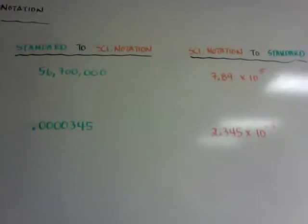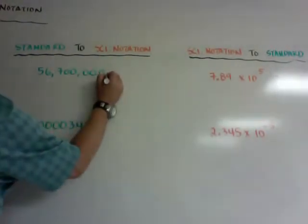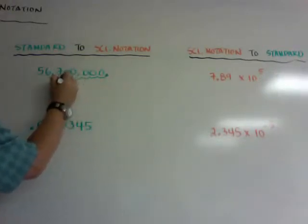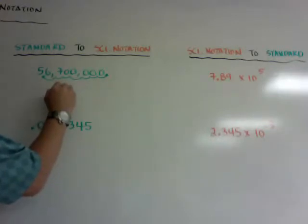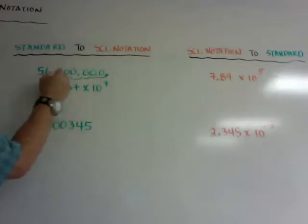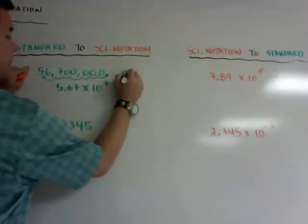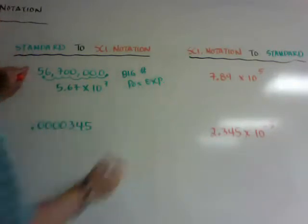Over here, I have a really big number. What I need to do is change my decimal. If my decimal is here, I need to go 1, 2, 3, 4, 5, 6, 7. So I'm going 7 units that way. So it would be 5.67 times 10 to the 7th power. Because I'm minusing 7 this way, I can put a positive 7 there. Or think of it this way: a big number has a positive exponent.